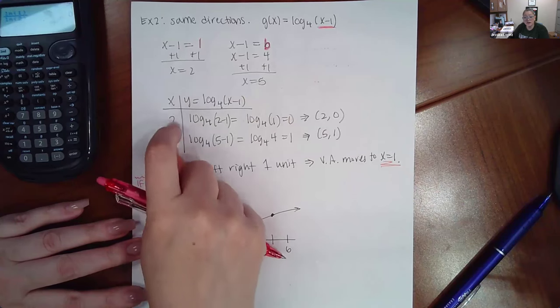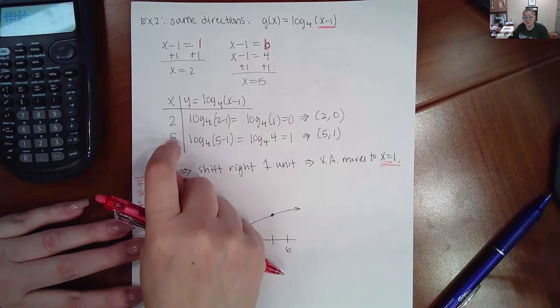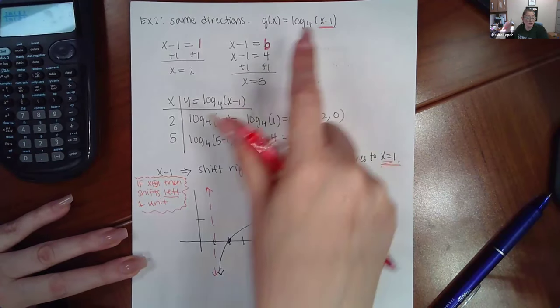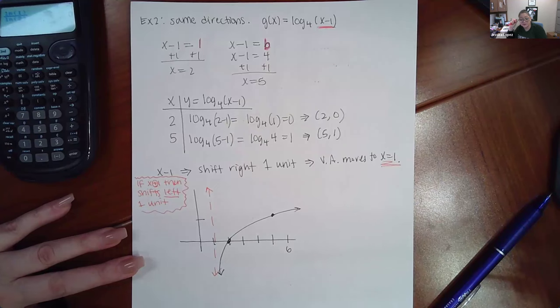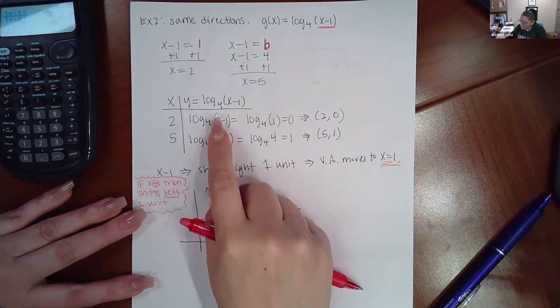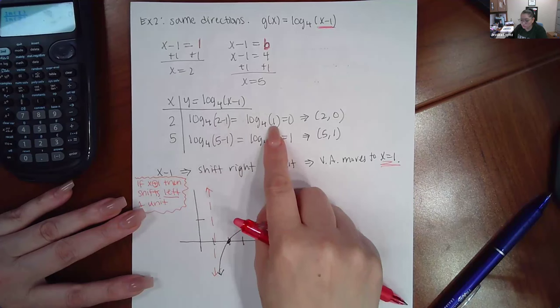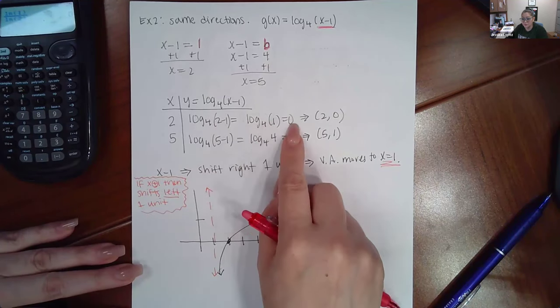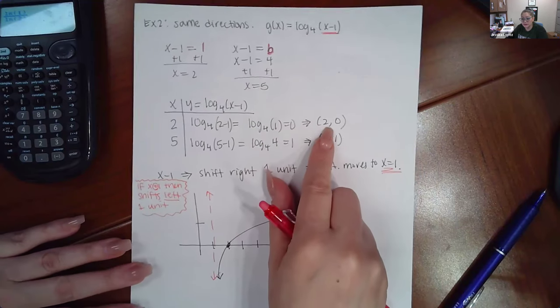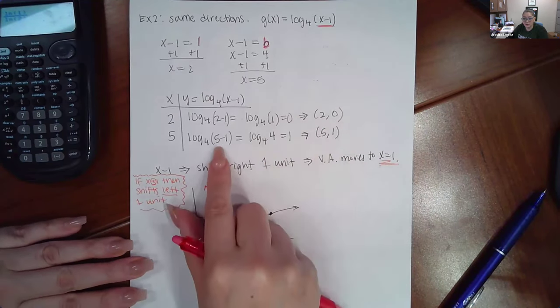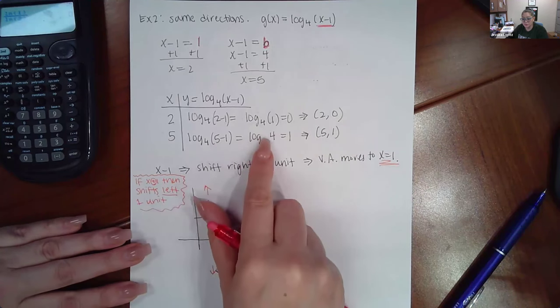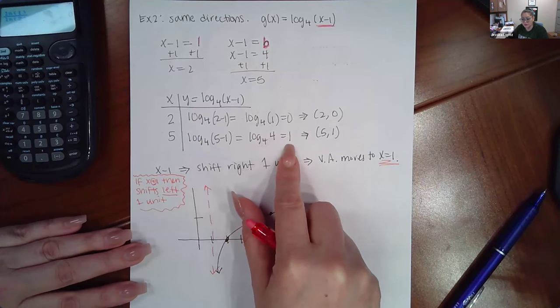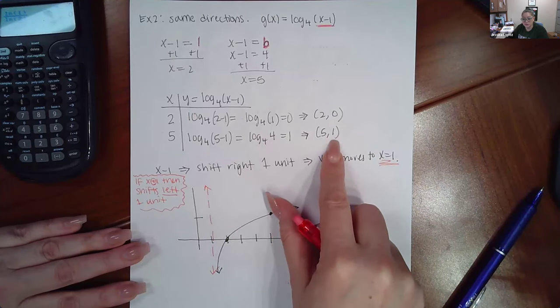And the result ended up in x equal to two and x equal to five. So instead of plugging in one and four, the base, we're now plugging in two and five. And it all has to do with the fact that there's a shift in that parentheses. So when I plug in two, I get two minus one inside the argument, which is one. We already know from the properties that log with any base of one is equal to zero. So I plugged in two for x and I got zero for y. Here I plugged in five, five minus one is four. We know that when the base and the argument match, it does just equal one. So I plugged in five and resulted in a one.